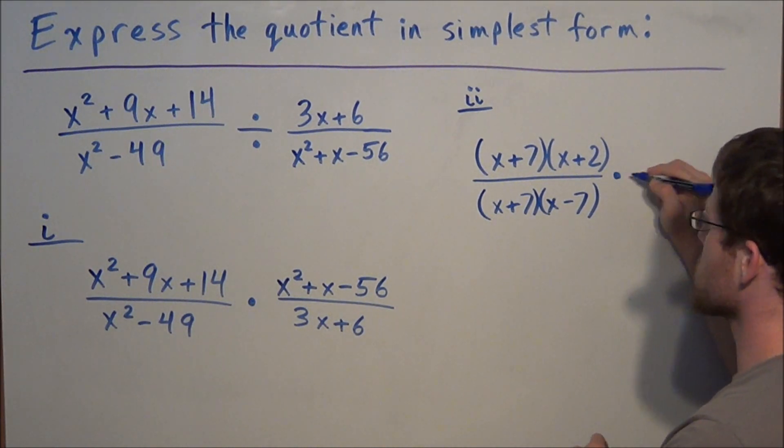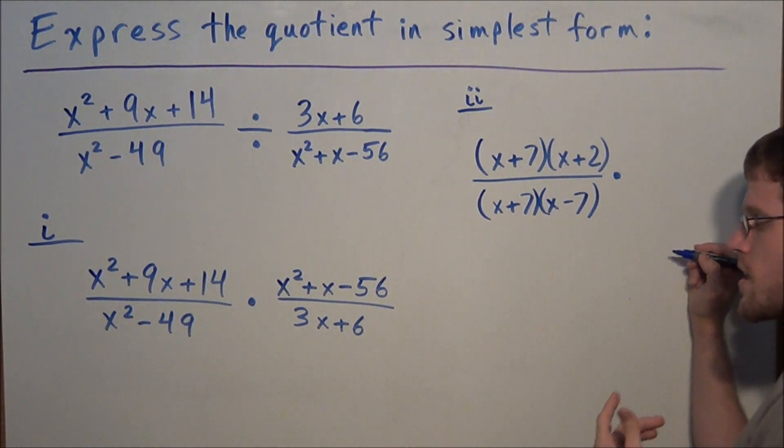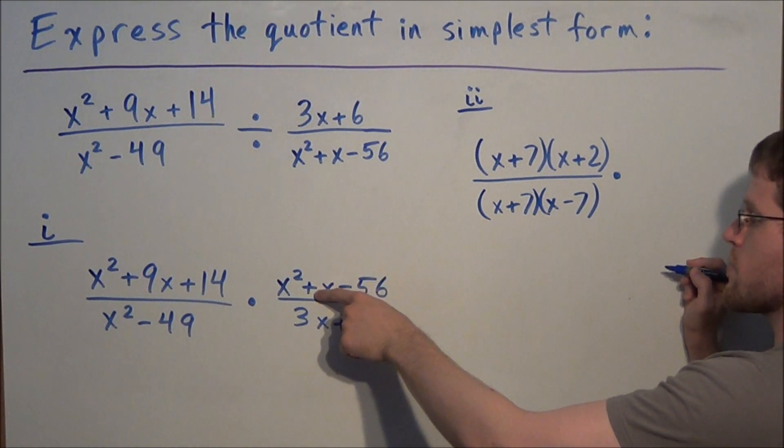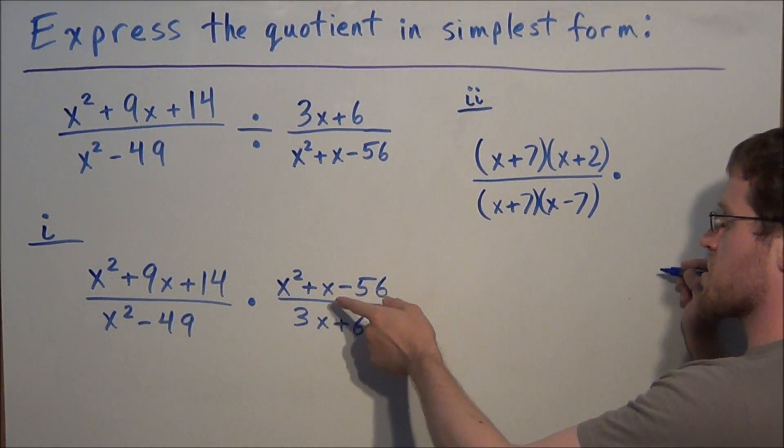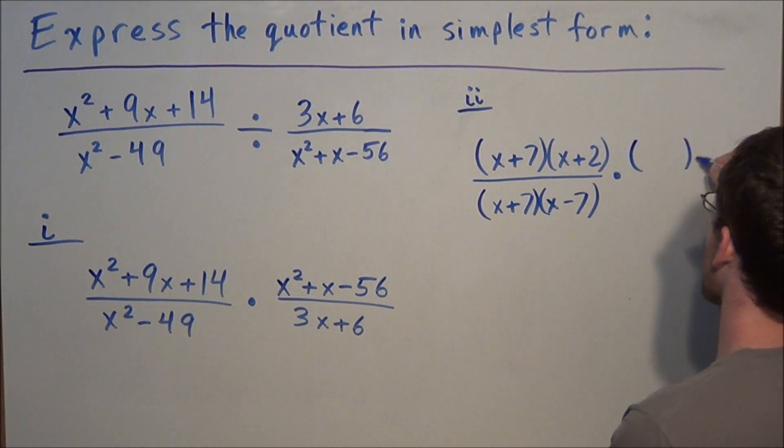Now we take care of the second fraction. We have x squared plus x minus 56. So once again, we're looking for two numbers that add to positive 1. Remember there's an invisible 1 here if no number is written. And the numbers have to multiply to negative 56.